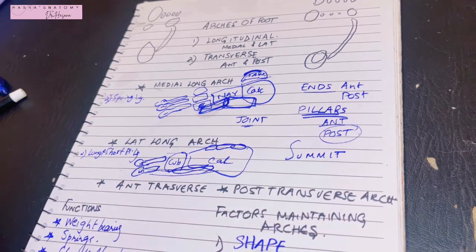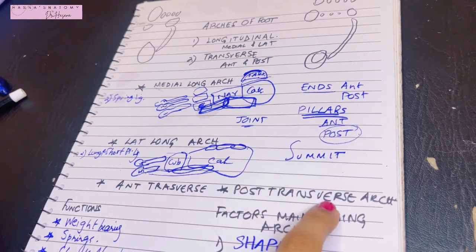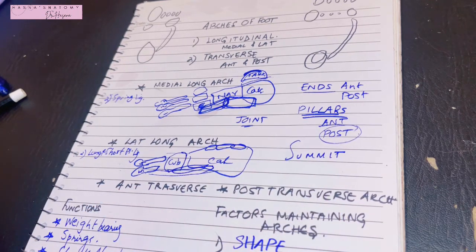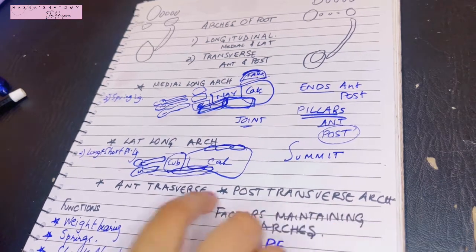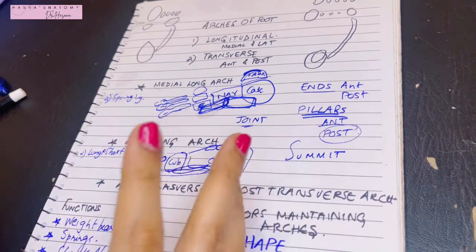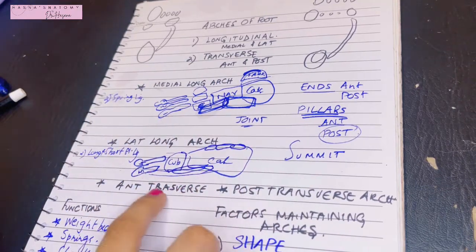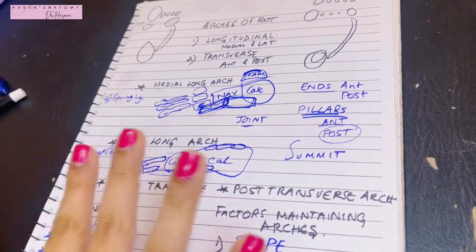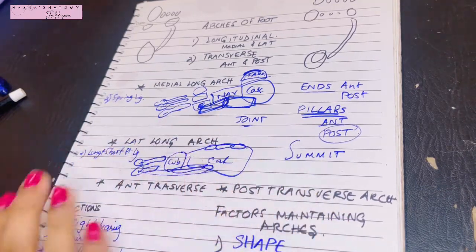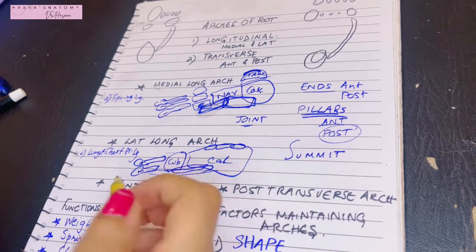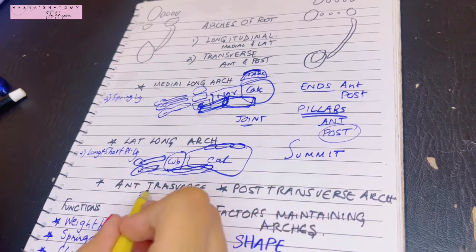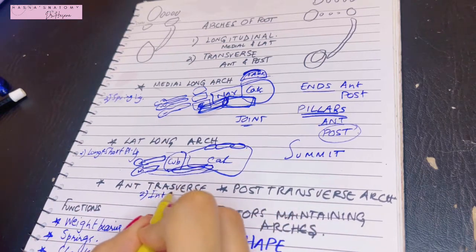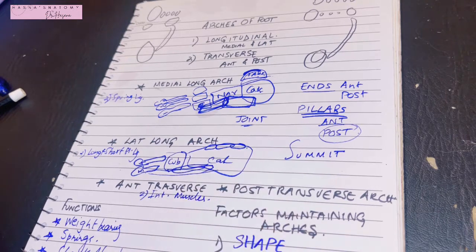For the anterior and posterior transverse arches, the intersegmental ties are the interosseous muscles, because the transverse arches are mostly formed between the metatarsals, and the metatarsals are linked to each other via the interosseous muscles between them.